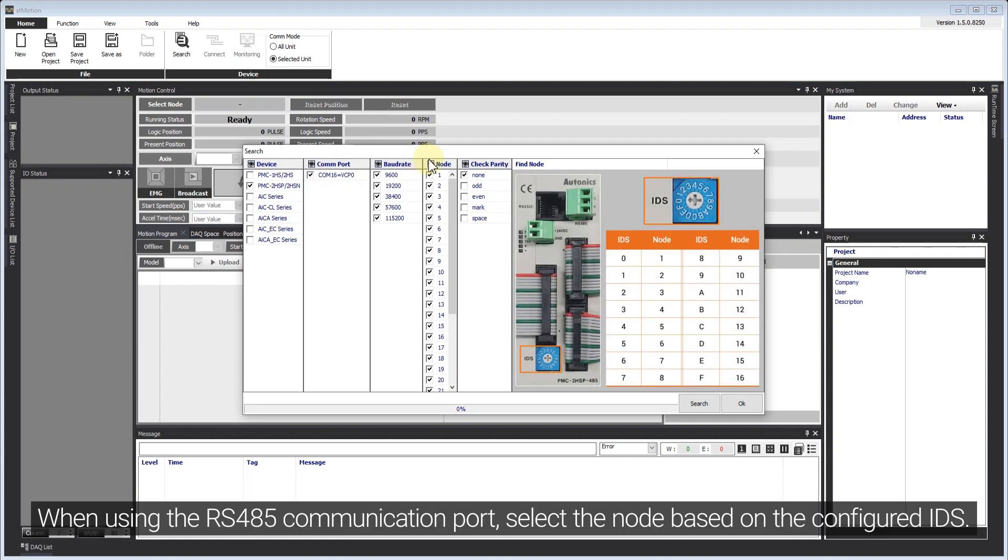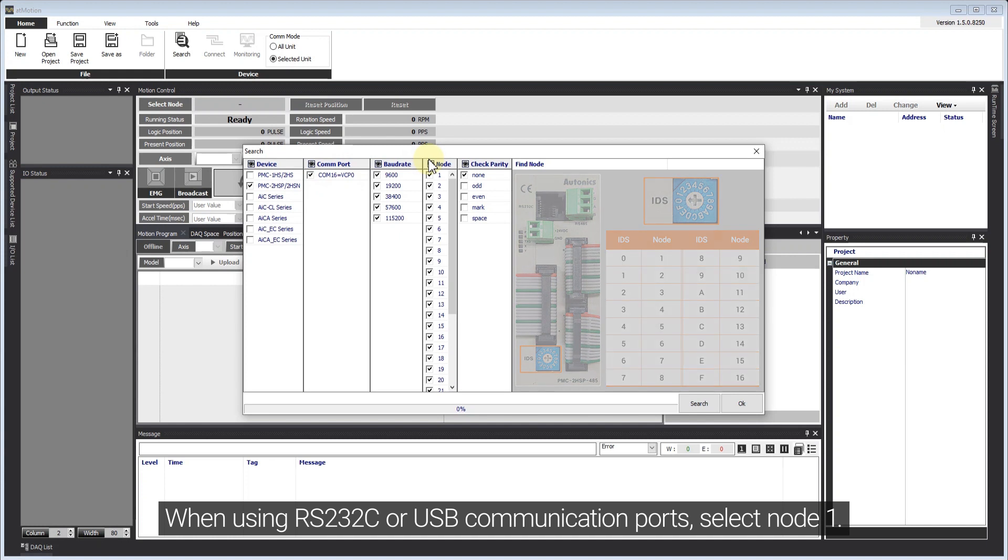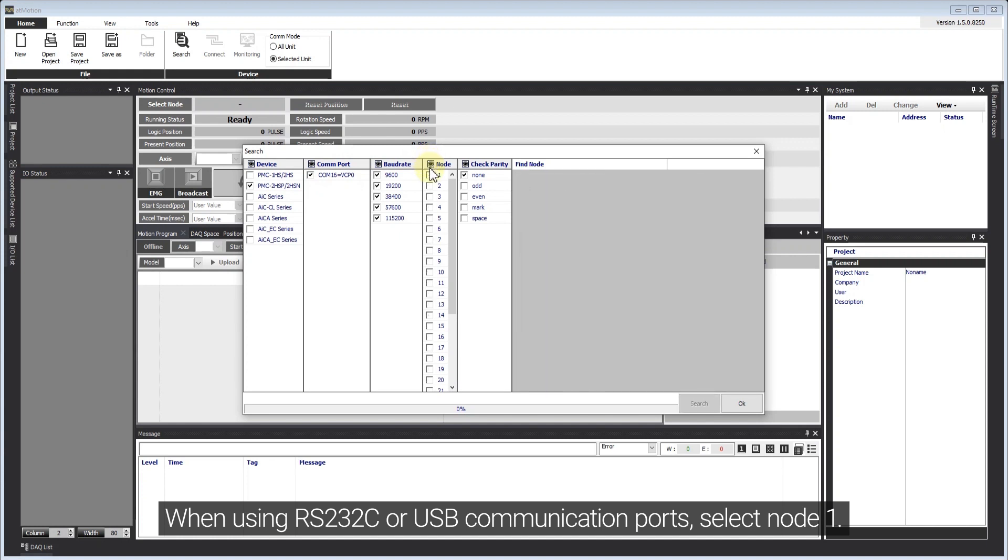When using the RS-485 communication port, select the node based on the configured IDs. When using RS-232C or USB communication ports, select node 1.